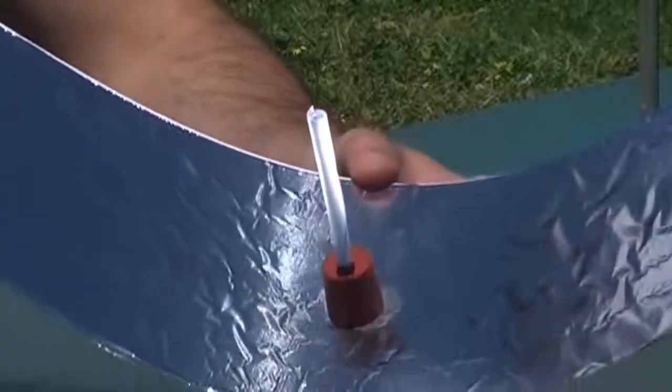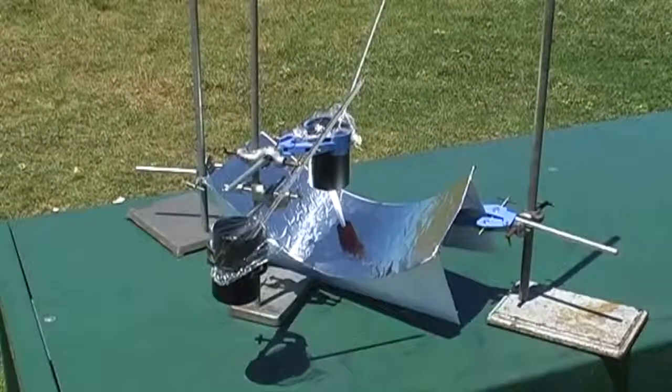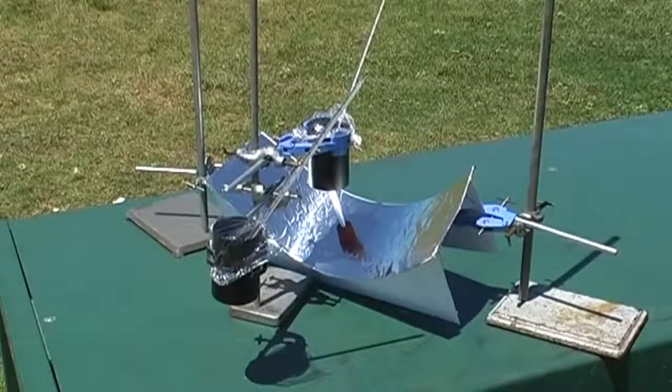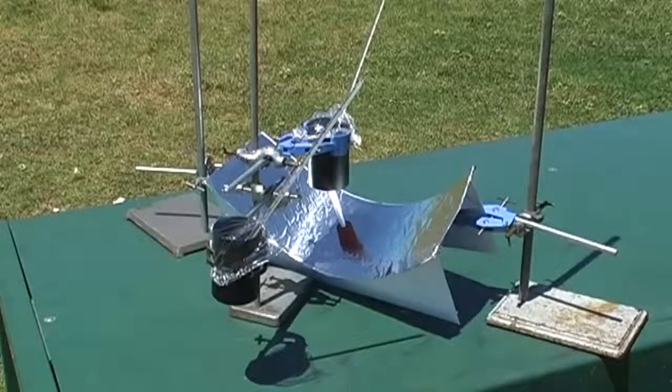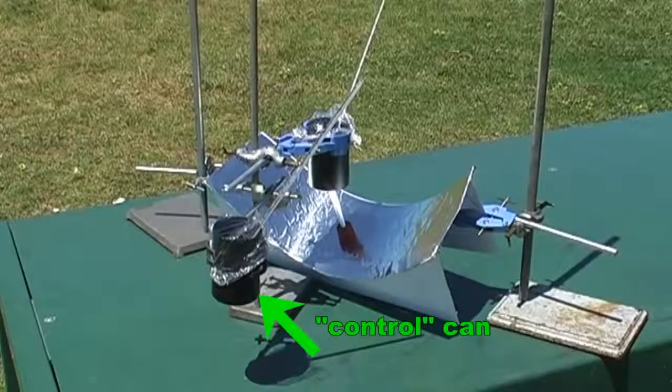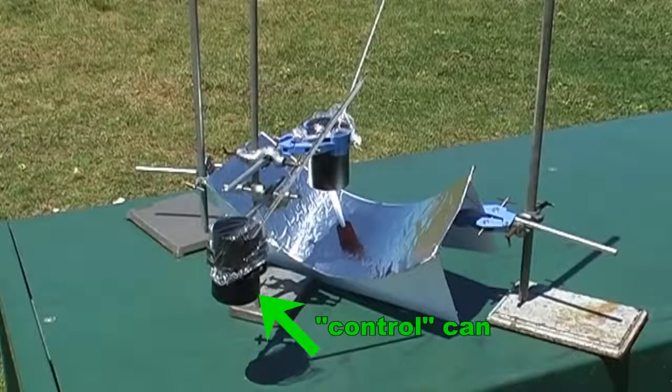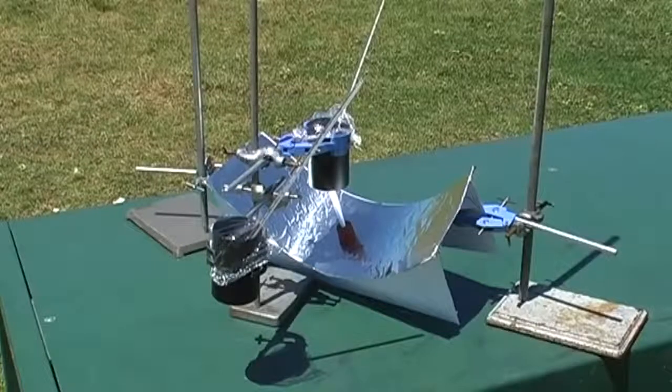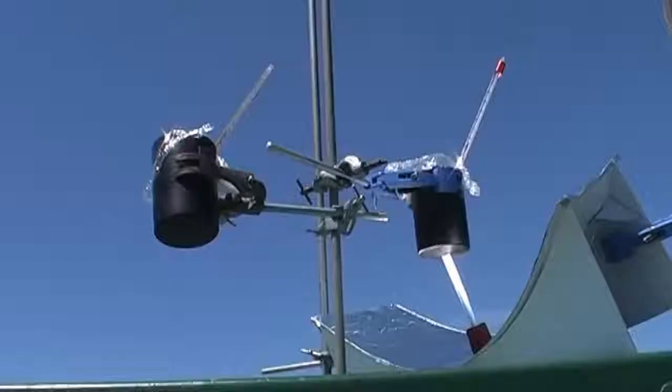Remember, never look at the sun. A can of water placed here at the focal point is receiving direct sunlight and a huge amount of reflected sunlight. While this can nearby, our control can with the same amount of water in it, is only receiving direct sunlight. It's really obvious when you look at it from underneath.